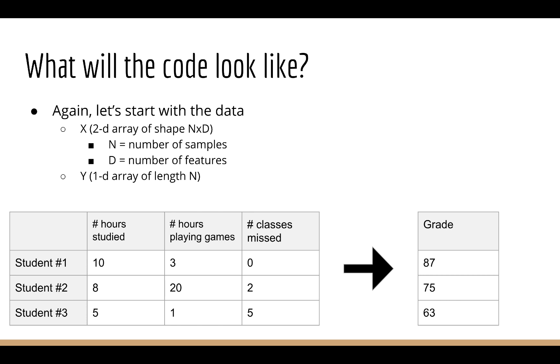Crucially, note that their shapes are the same as in the classification case. x is a 2D array of shape n by d, and y is a 1D array of length n. n is the number of samples, and d is the number of input features.